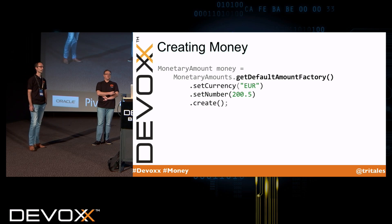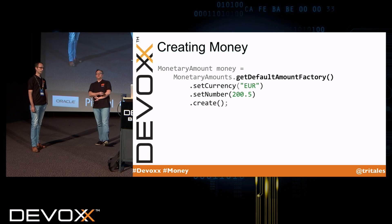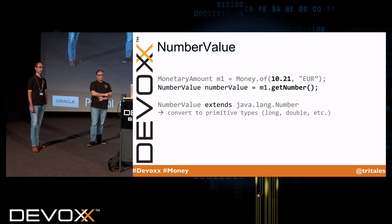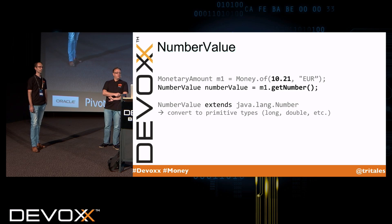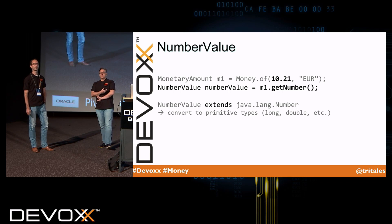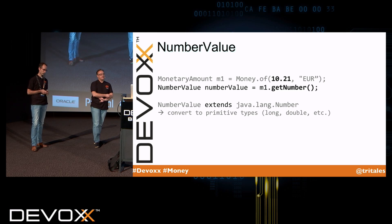There are several ways that we can create money. The easiest way is to get your hands on a default amount factory, pass in the currency and the value, and we're done. Now if we're using the reference implementation it gets even easier — call one of the static of methods on the Money class and you're set to go. To get only the numeric value of the money, you can call the getNumber method, which returns a NumberValue that extends the java.lang.Number class. So it's really easy to convert it to other primitive types like long, double, etc.